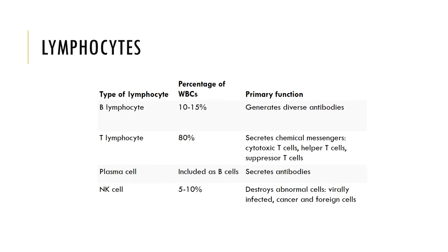The lymphocytes consist of three classes and circulate in the blood, and are sensitive to specific antigens. B cells account for about 10 to 15 percent of circulating lymphocytes. When stimulated by an antigen, B cells differentiate into plasma cells which produce and secrete antibodies. B cells are said to be responsible for antibody-mediated immunity, also called humoral immunity, because antibodies circulate widely within body fluids and attack targets with foreign antigens.